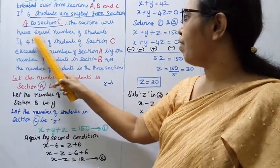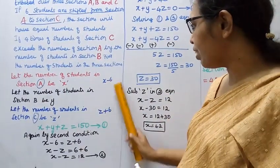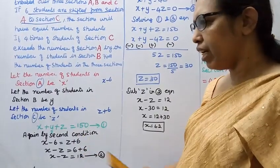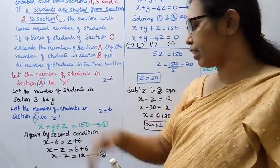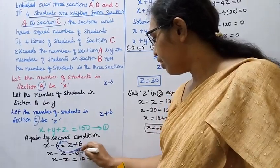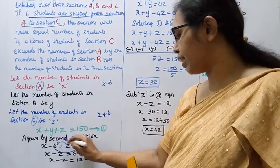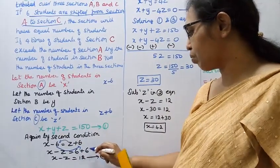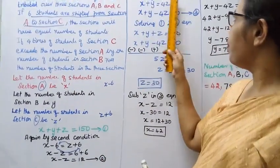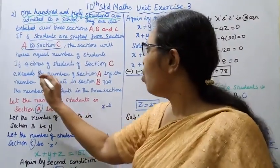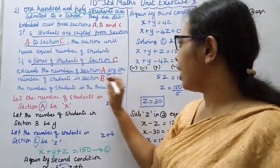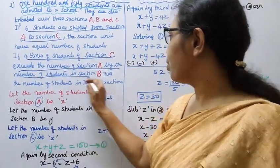The sections will have equal number of students, meaning they are equal. By the second condition: x minus 6 equals z plus 6. Rearranging, x minus z equals 6 plus 6, which gives x minus z equal to 12. This is the second equation.